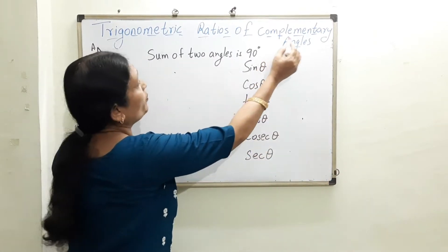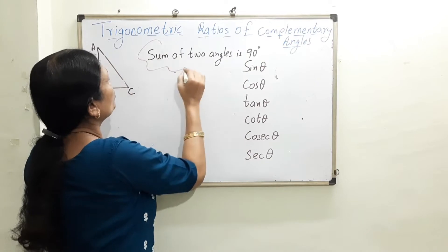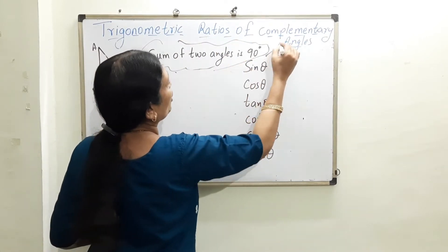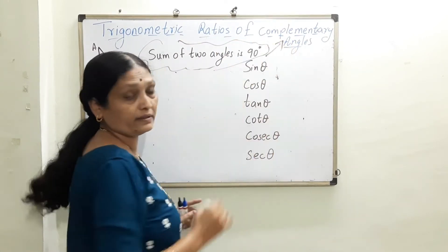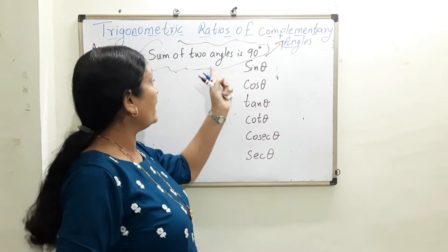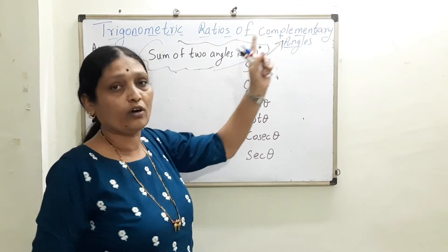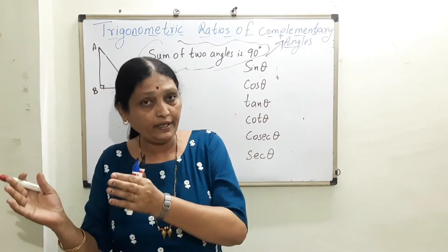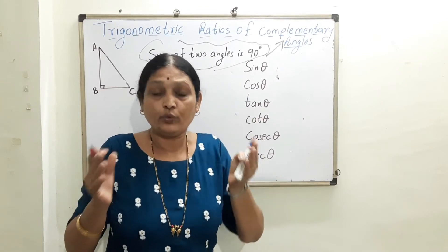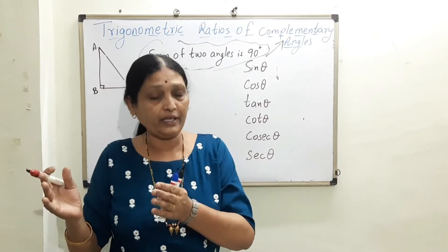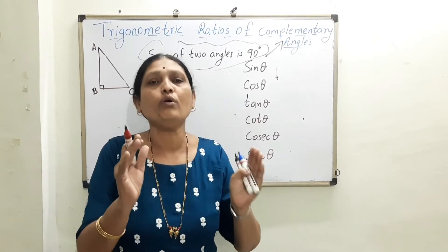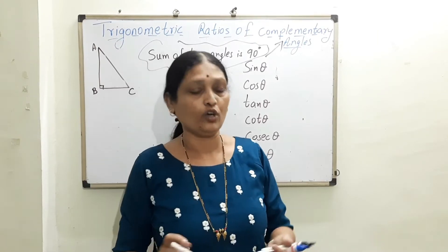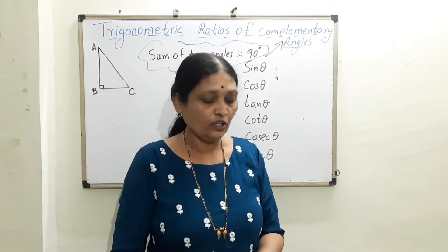What are complementary angles? If the sum of two angles is 90 degrees, they are called complementary angles. For example, 10 and 80 are complementary angles, and 20 and 70 are complementary angles. When two angles add up to 90 degrees, they are called complementary angles.